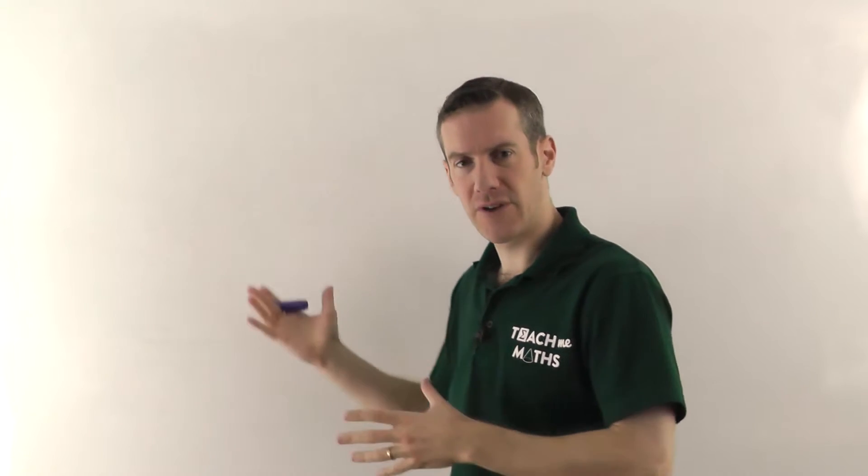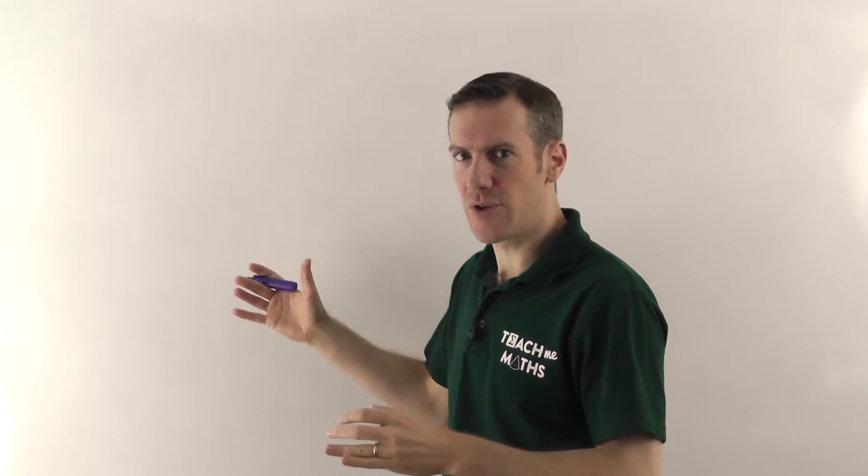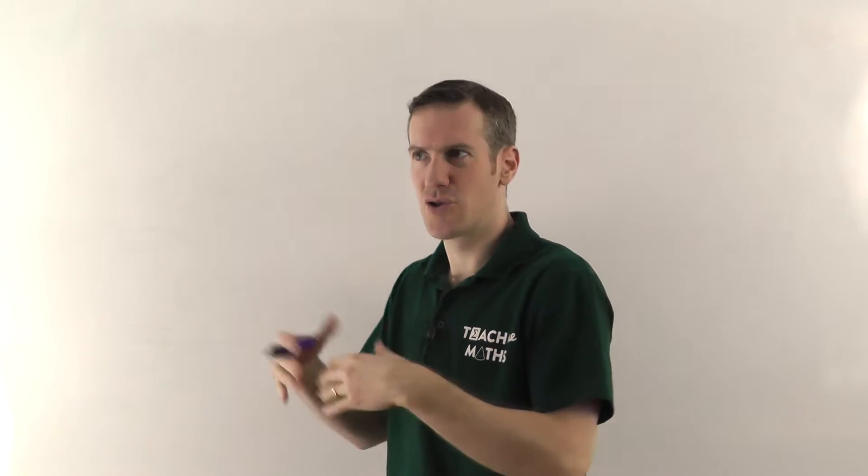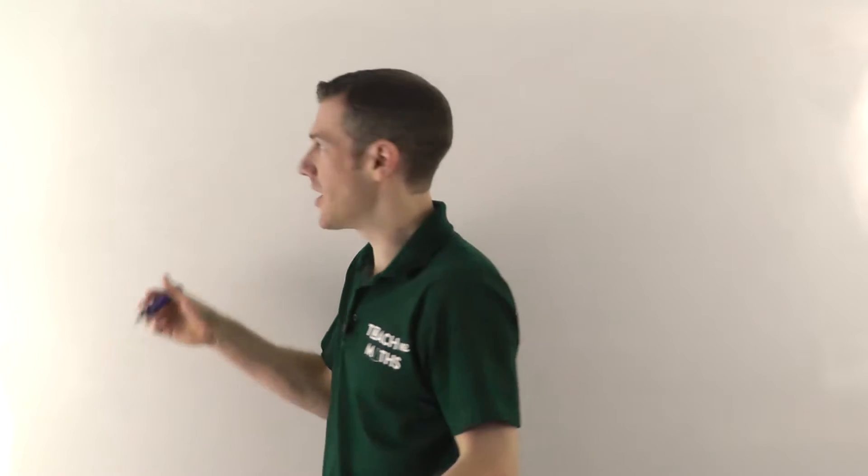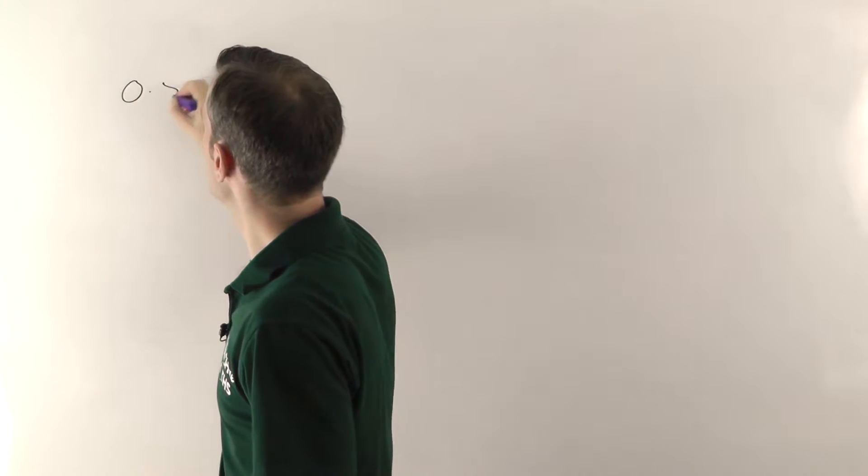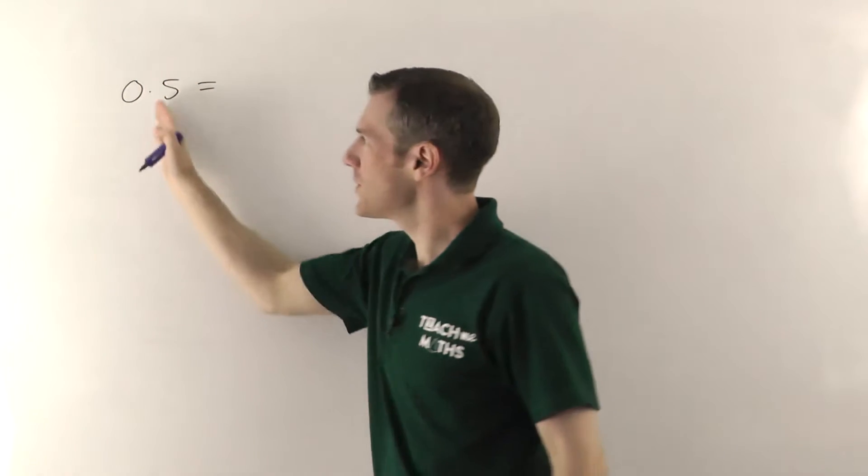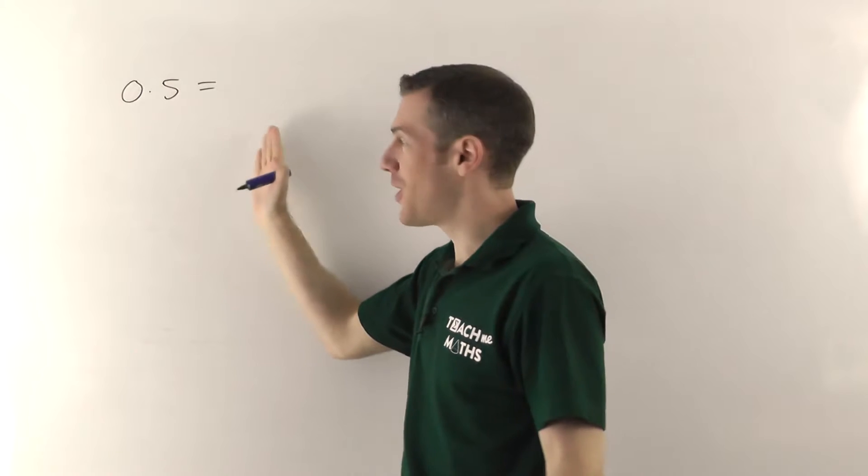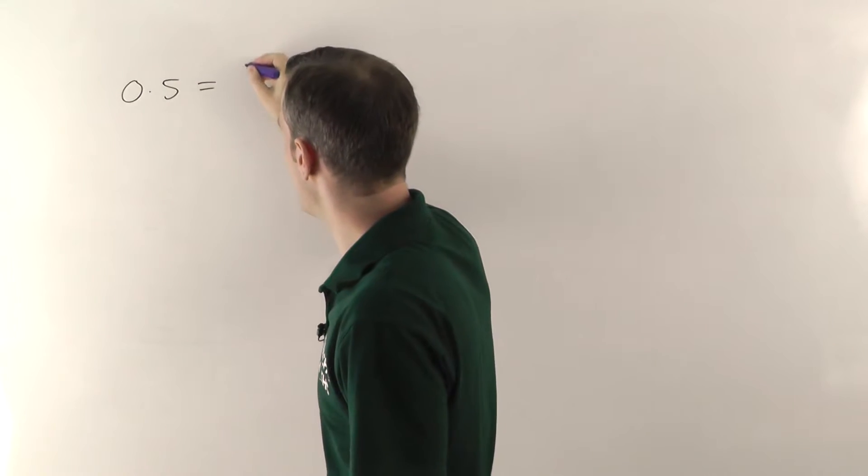Alright, so let's say you've got some decimal number you want to convert it into a fraction. Now there are some that you should just know, that you shouldn't have to do anything to them, you should just know what they are. So for example, 0.5, you shouldn't be using some method to convert that into a half, you should just know that 0.5 is a half.